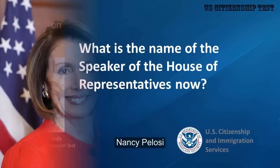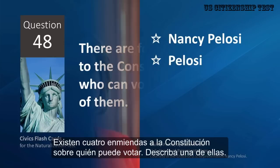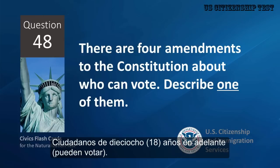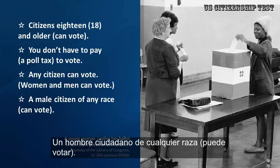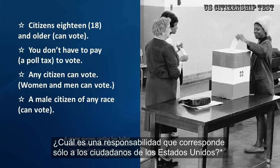What is the name of the Speaker of the House of Representatives now? Nancy Pelosi. There are four amendments to the Constitution about who can vote. Describe one of them. Citizens 18 and older can vote. You don't have to pay a poll tax to vote. Any citizen can vote — women and men can vote. A male citizen of any race can vote.